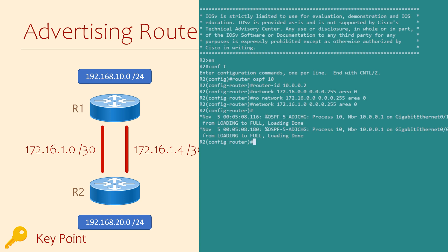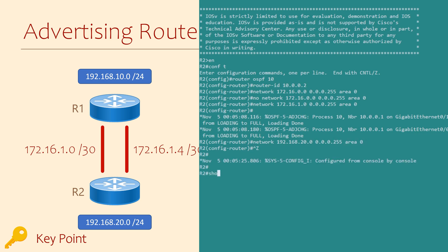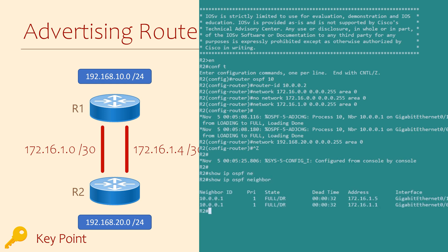The adjacency has come up. We have another network to add, of course. And to confirm, we can look at the OSPF neighbor list. Here we have one neighbor, but two neighbor relationships.